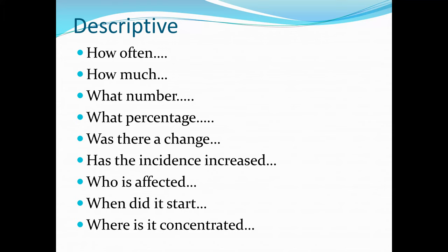The main objective of descriptive questions is to describe the extent of a health phenomenon — who experiences it, and where and when it occurs. For example, consider questions about the body mass index (BMI) of Americans, such as describing the trend of BMI. These questions typically begin with 'how often,' 'how much,' 'what number,' or 'what percentage.' For instance: how many Americans are overweight?